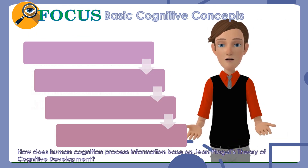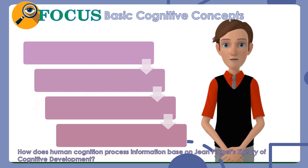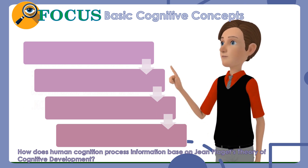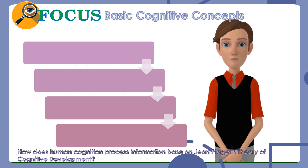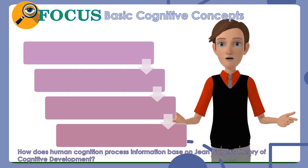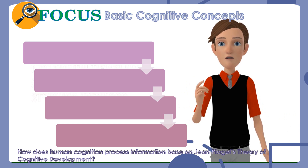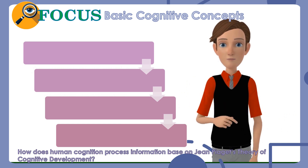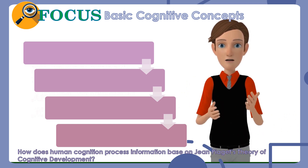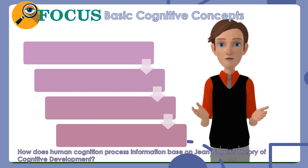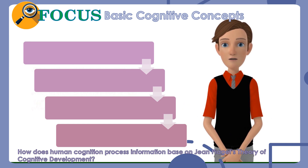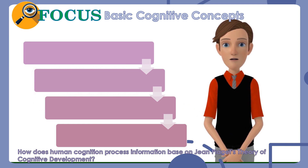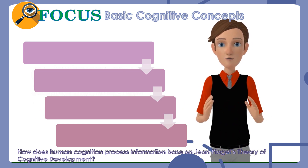To begin, let us look at the basic processes of how human cognition processes information. Jean Piaget introduced the following basic cognitive concepts: schema, assimilation, accommodation, and equilibration.